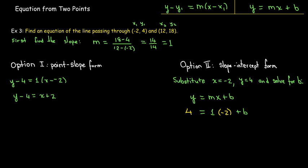Then I'll solve this equation for b. I just need to add 2 to both sides. So b will equal 6. So the equation in slope-intercept form would be y equals x plus 6.